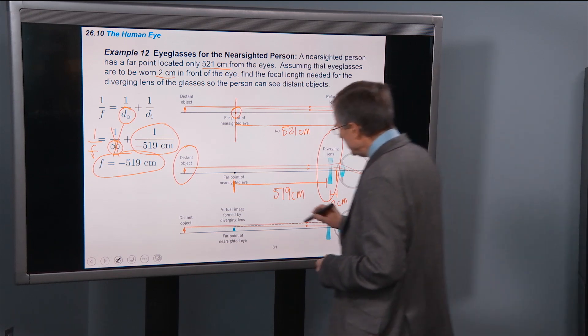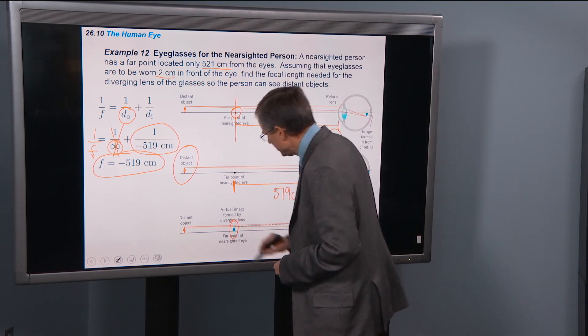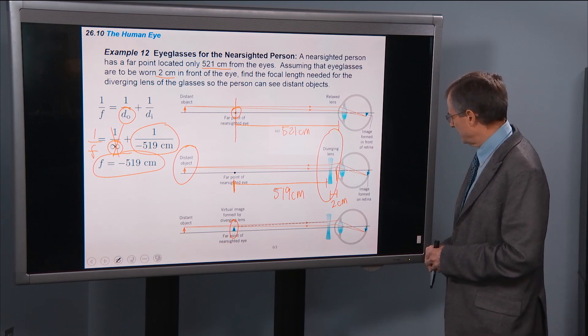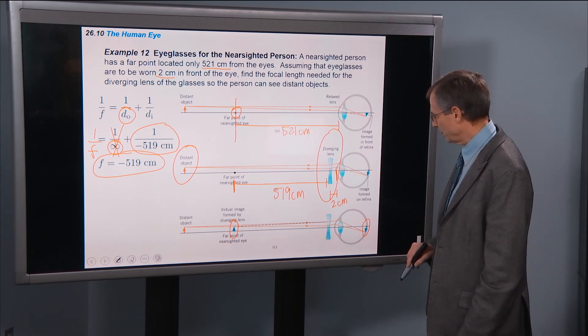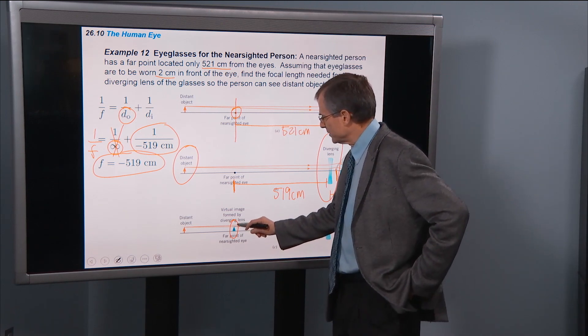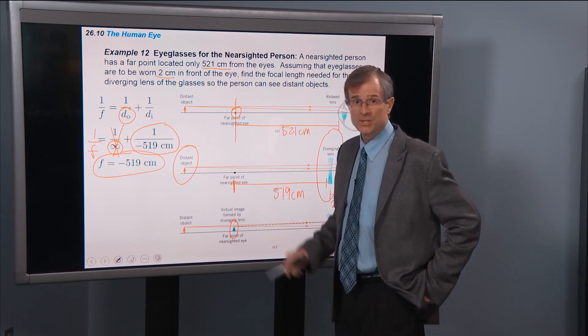Yeah, and so here is the virtual image formed by that diverging lens. We get a real image over here on the retina. That's what's causing me to pause a little bit. But the virtual image is formed at that point, at that image distance.